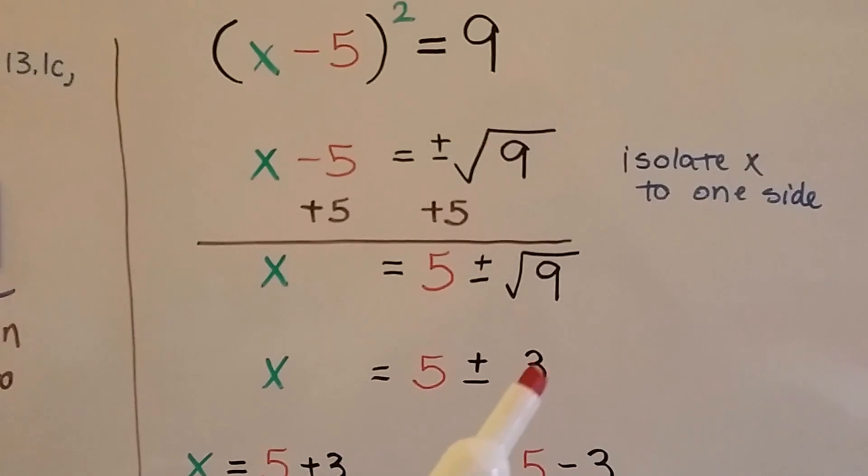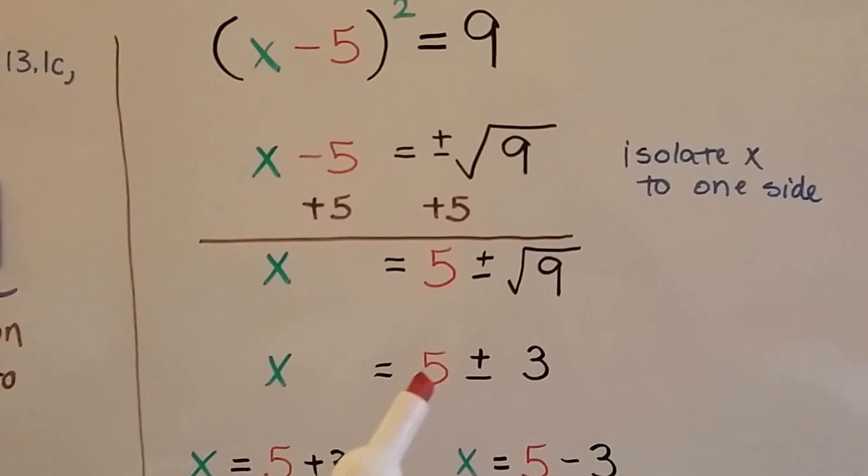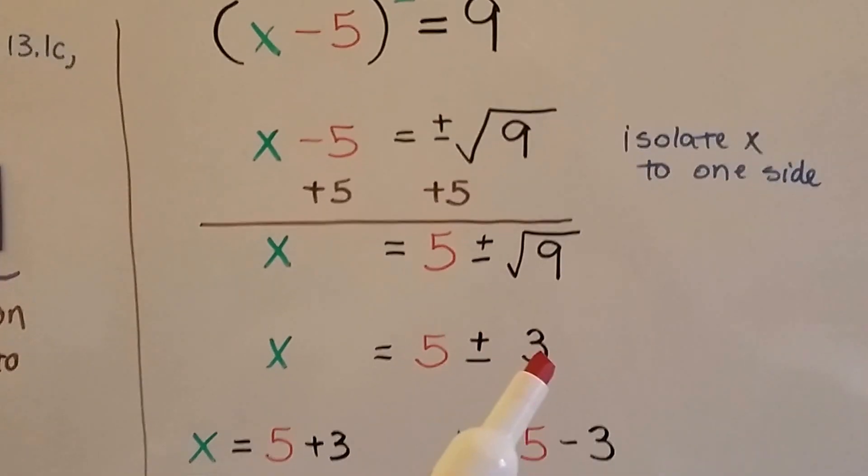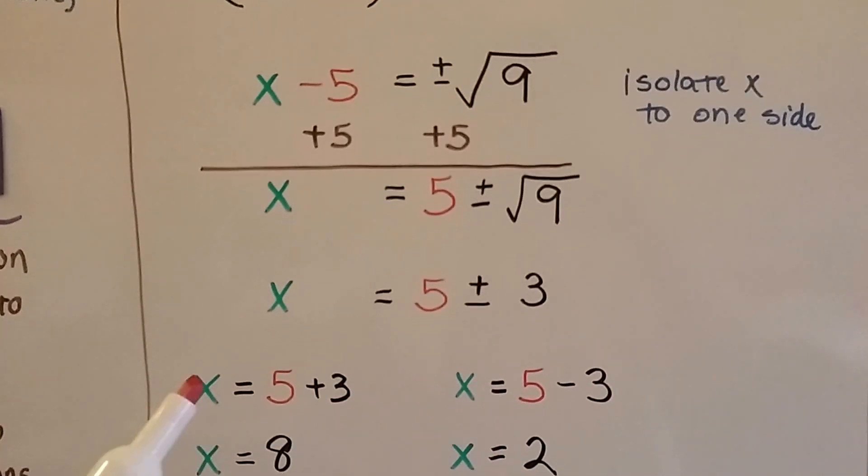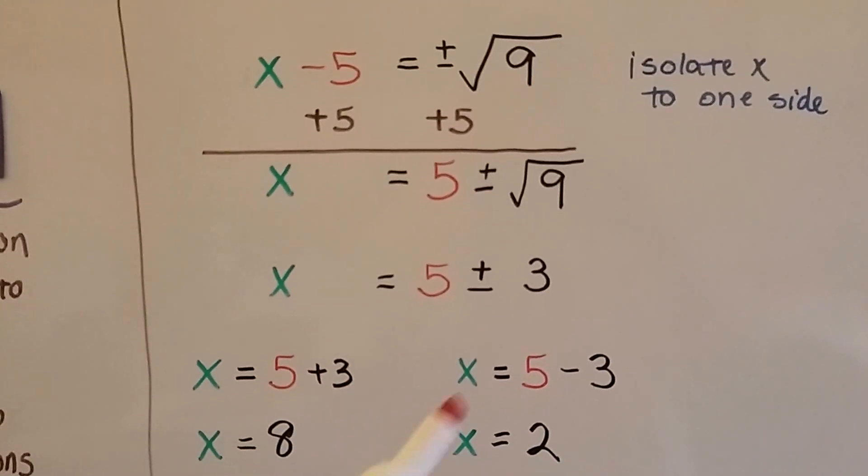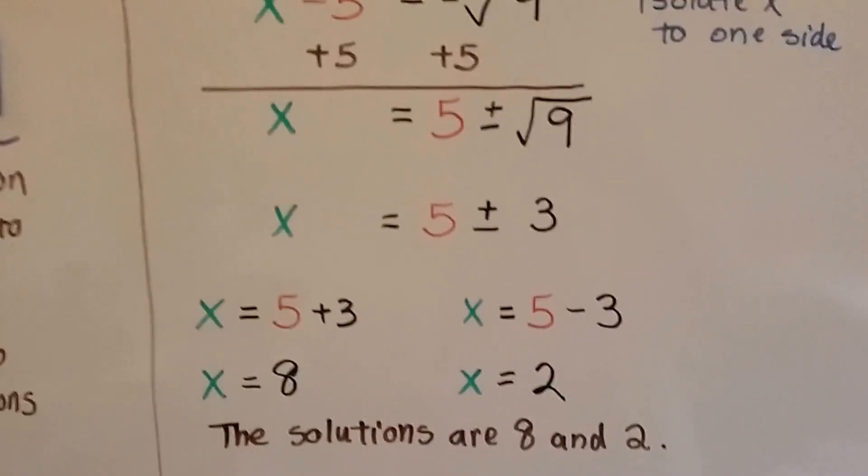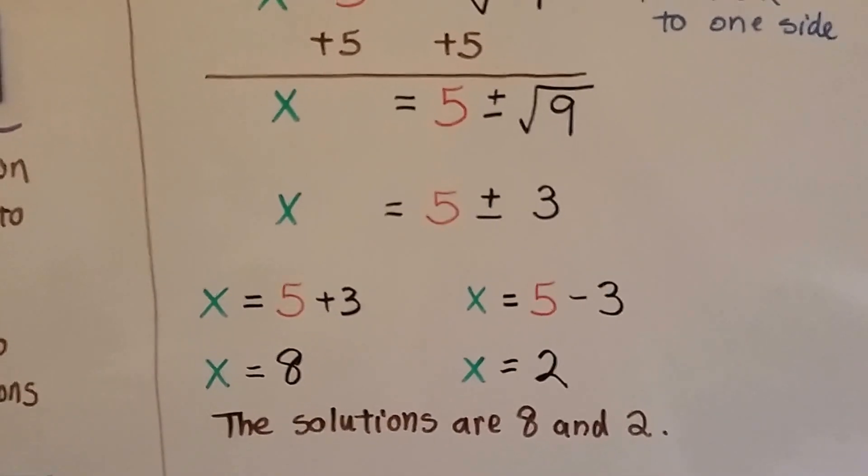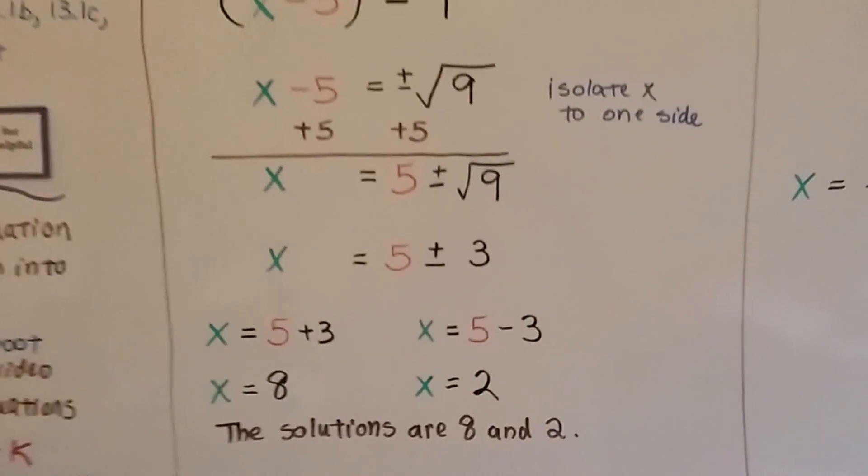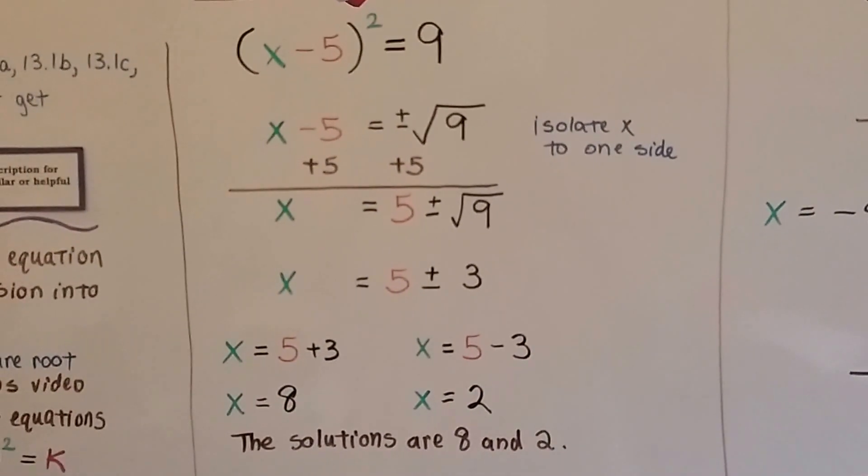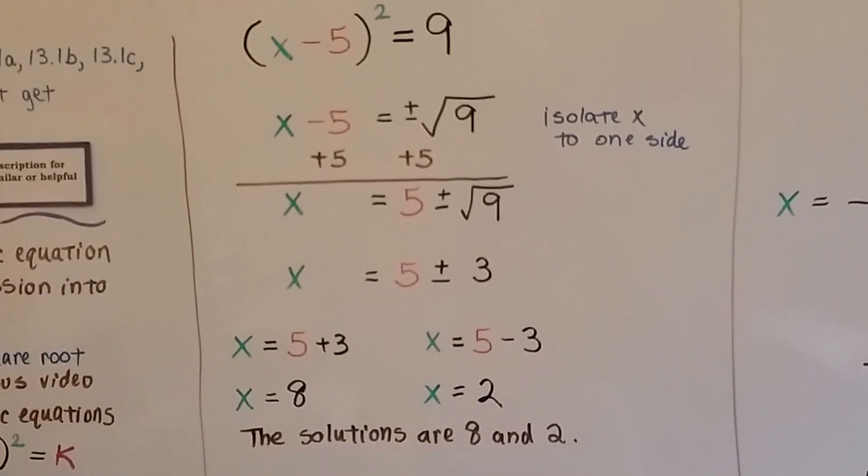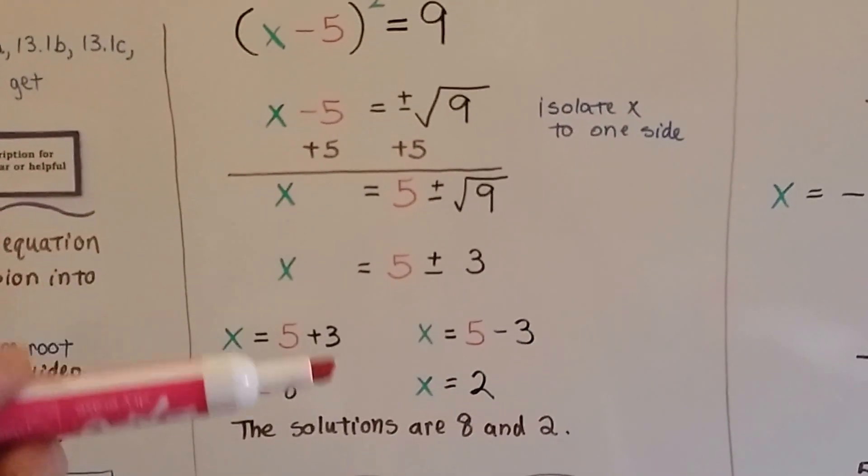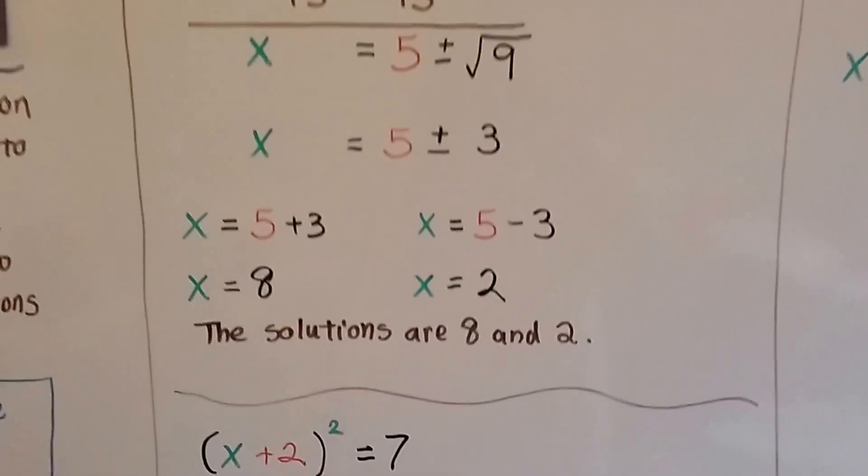Now we're going to do this guy. 3 times 3 is 9, so now we've got x equals 5 plus or minus 3. And because these are rational, we solve it as x equals 5 plus 3, which is 8, or x equals 5 minus 3, which is 2. So our solutions are 8 and 2. That was kind of easy. You take this two exponent, you get rid of it by flipping a radical sign to that side, you isolate x, and you find your solution.